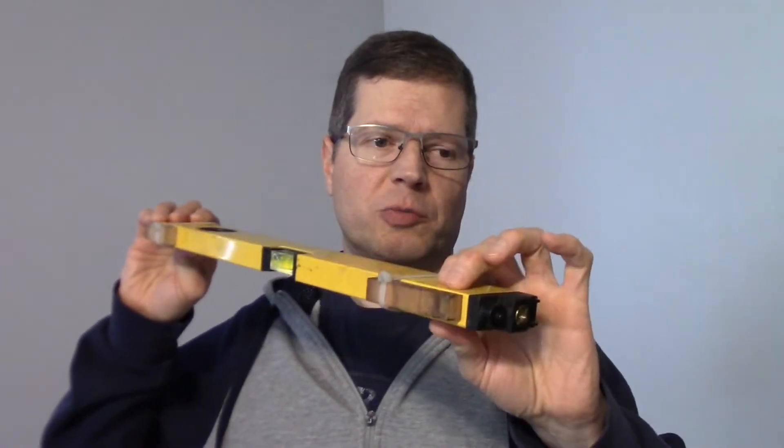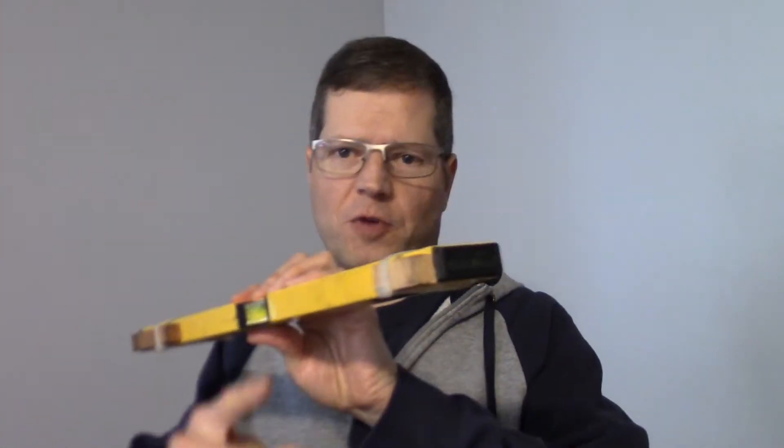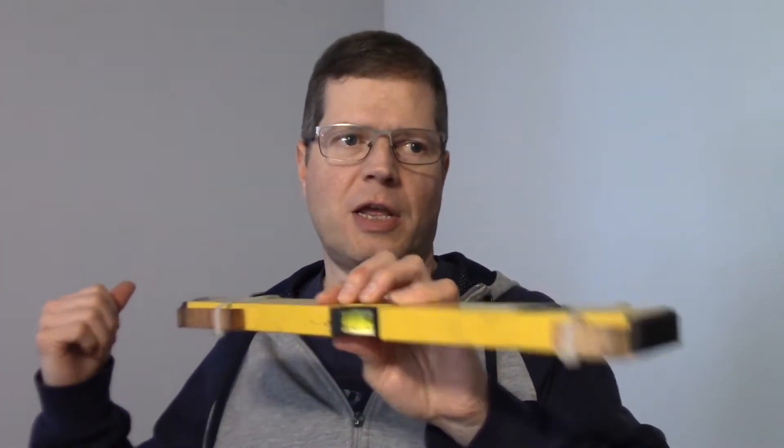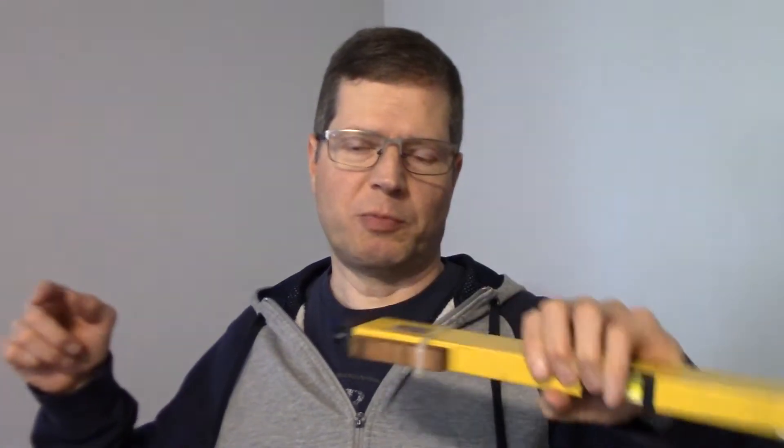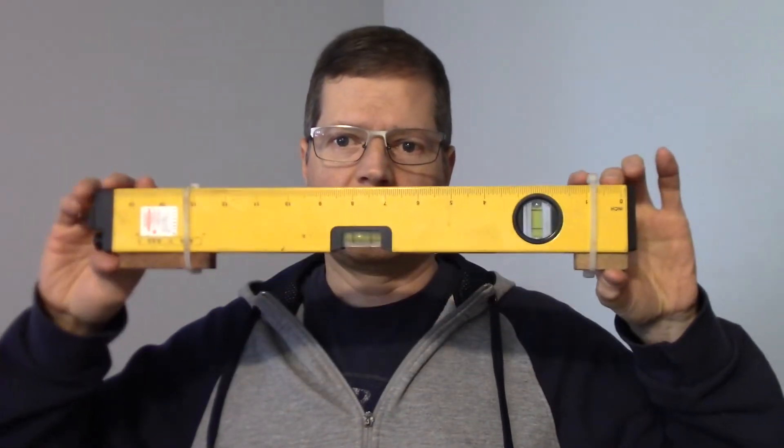The way to compensate for that is if you measure back so many feet and then forward so many feet and draw the line between those two and measure the angles between the left and right side, that'll compensate for a little bit off on your parallelness.